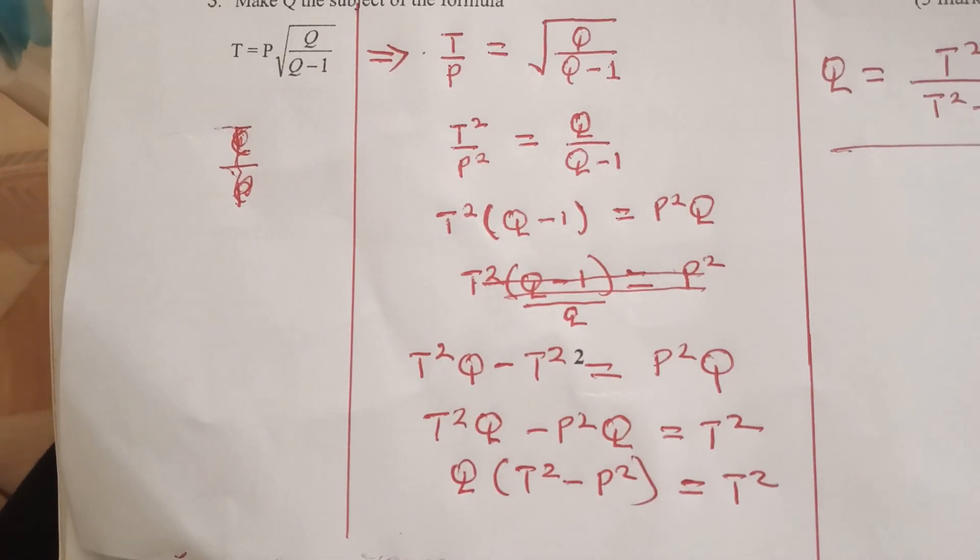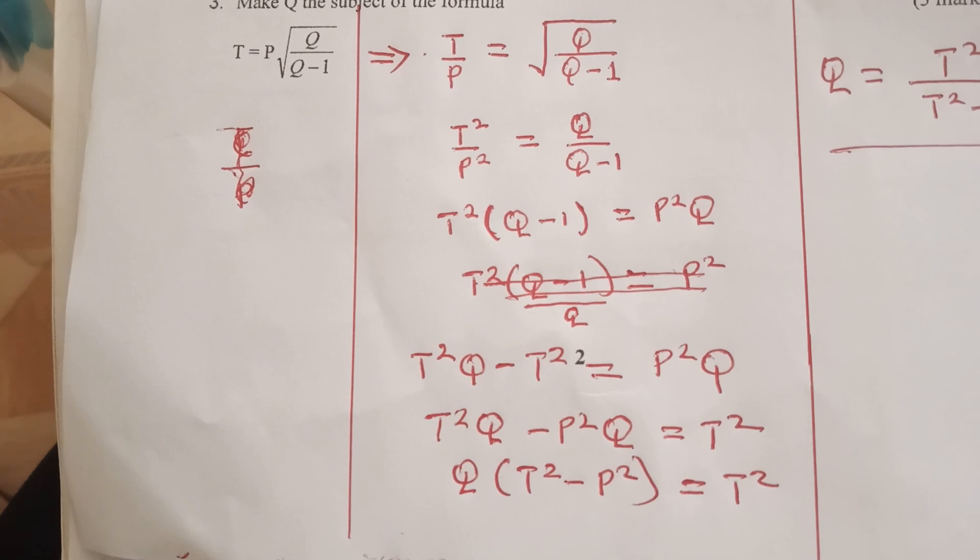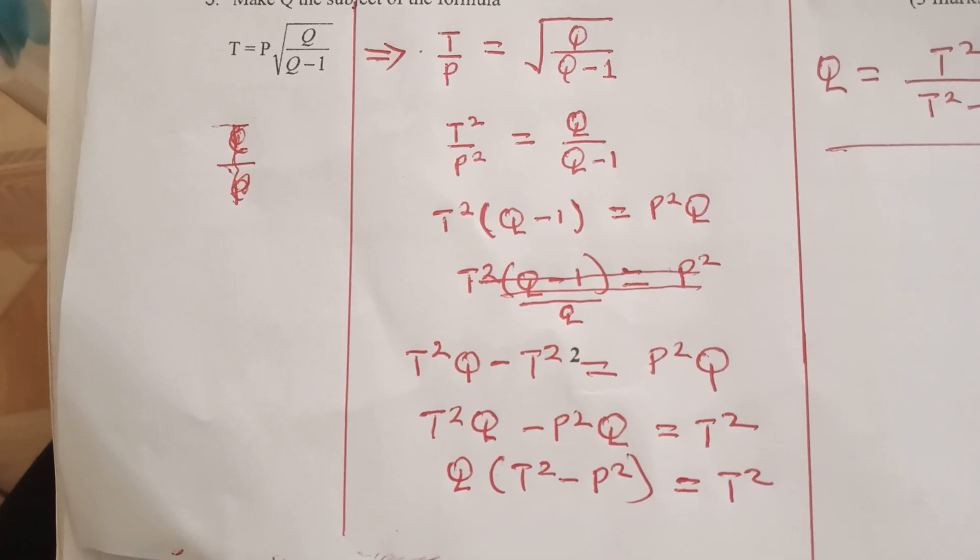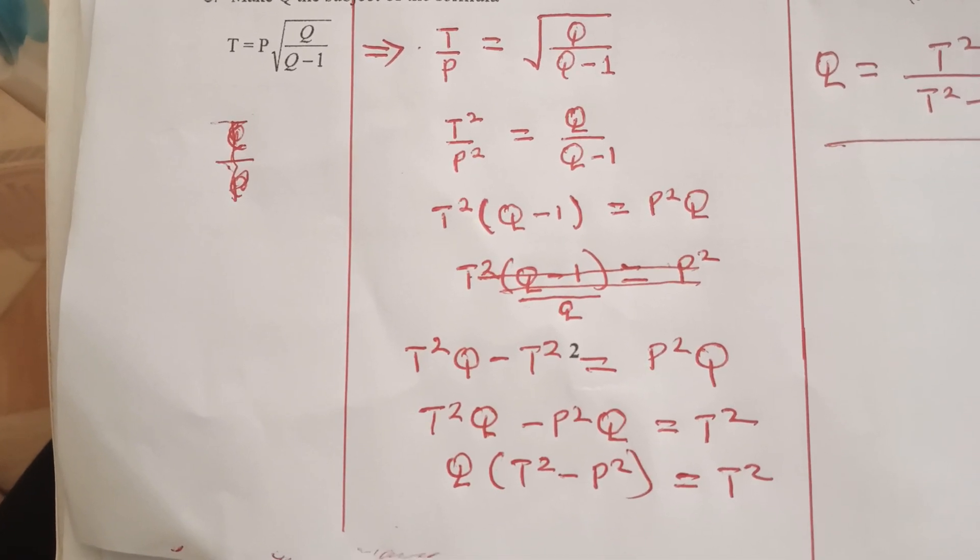Then we cross-multiply, so it will be T squared into Q minus 1, which should be equal to P squared Q.